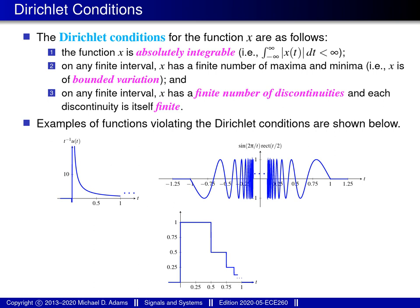The next theorem relates to functions that satisfy a set of conditions known as the Dirichlet conditions. The Dirichlet conditions are a set of three conditions. The first condition is that the function x is absolutely integrable — in other words, this integral converges to a finite value. The second condition is that on any finite interval, the function x has a finite number of maxima and minima, meaning x is of bounded variation. The third condition is that on any finite interval, x has a finite number of discontinuities, and each discontinuity is itself finite — both the count of discontinuities and the jump at each one must be finite.